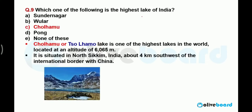Which is the highest lake in India? The highest lake in India is Cholamu Lake, also called Solamu Lake. It is one of the highest lakes in the world, situated at an altitude of 6,065 meters. It is situated in Sikkim, about four kilometers southwest of the international border with China.